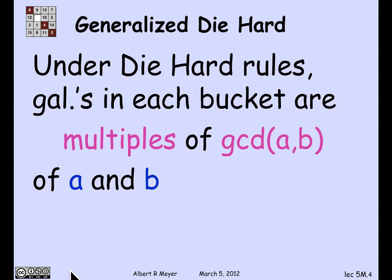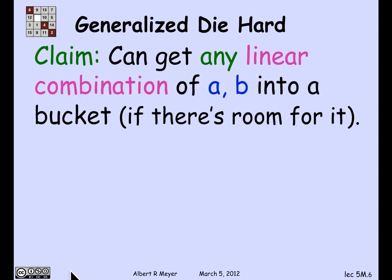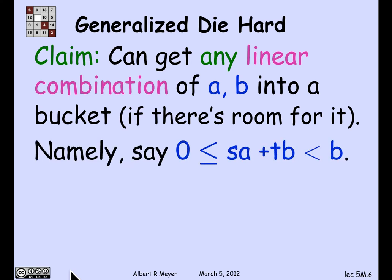That gives us a pretty good understanding of what amounts we can get in the various buckets. We can only get multiples of GCDs. But in fact, you can get any multiple of the GCD of A and B into a bucket, providing it'll fit in the bucket. That's the same as saying you can get any linear combination amount of A and B into a bucket if there's room for it.